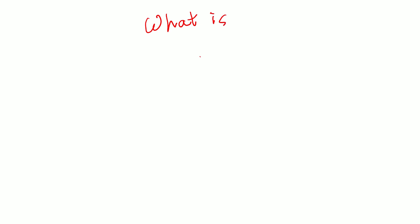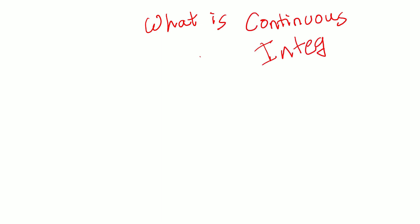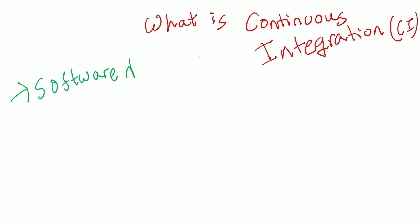Welcome to this video where we are going to be talking about continuous integration, or CI in short. So what is continuous integration? It is a software development practice that involves frequently merging code changes into a central repository and then automatically building and testing the code to ensure that it is working as expected.